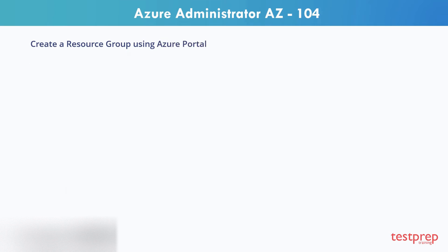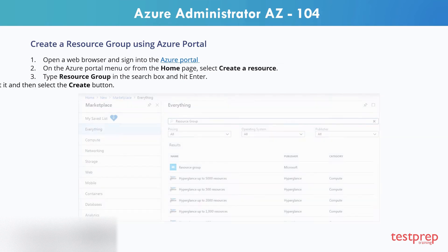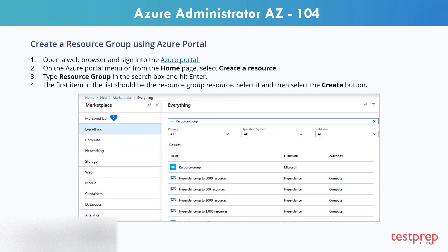To create a resource group using the Azure Portal: open a web browser and sign into the Azure portal. On the Azure portal menu or from the home page, select Create a resource. Type 'resource group' in the search box and hit Enter. The first item in the list should be the resource group resource.